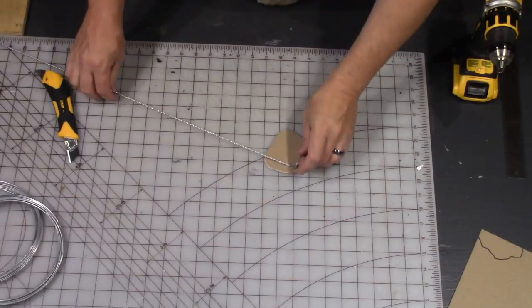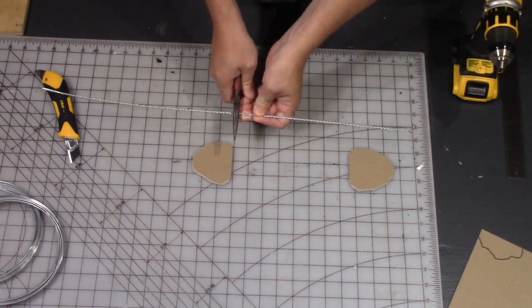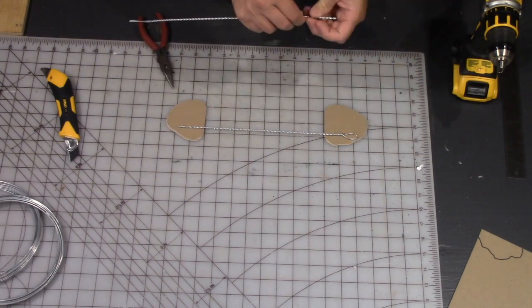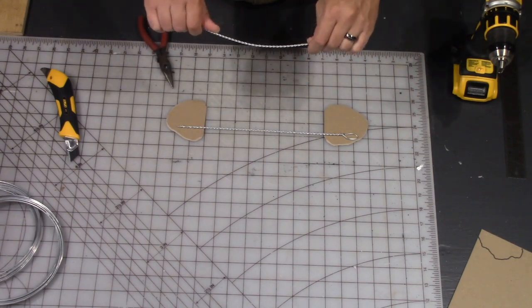Taking a chunk of wire, bending it in half and spooling it up on a drill and then cutting it to length. Just bending the curve of the bridge into that wire.